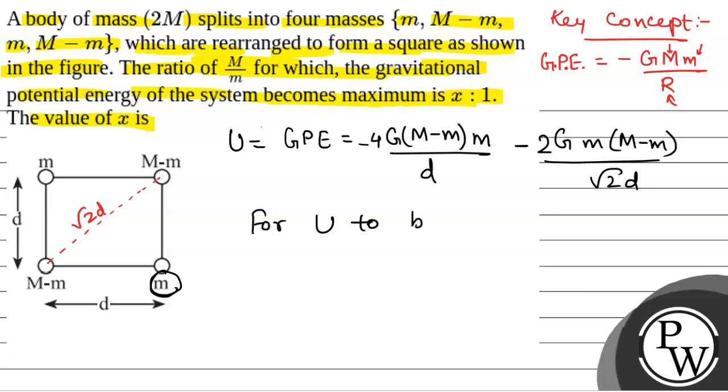Now, for U to be maximum, that is for maximum gravitational potential energy, dU/dM = 0. So, on solving, we will get 6M - 12m = 0, or M/m = 2. Therefore, x = 2.